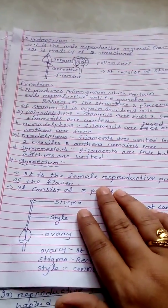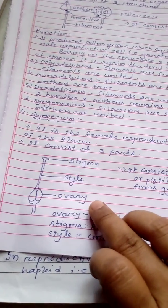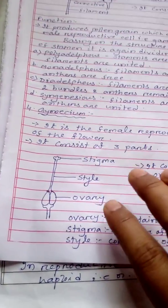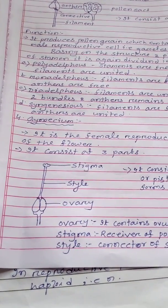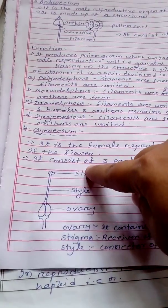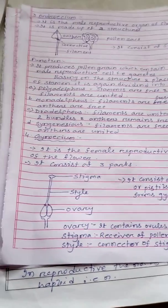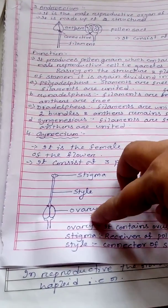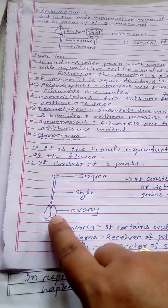The last whorl is the gynoecium. It is the female reproductive part of the flower and consists of three parts: stigma, style, and ovary. It consists of carpels or pistils. Inside the ovary, ovules are present which contain the embryonic seed; after maturation these ovules produce the seed. The stigma receives the pollen grains and is also known as the receiver of pollen grains. The style connects the stigma to the ovary and acts as the connector through which pollen grains travel toward the ovary.